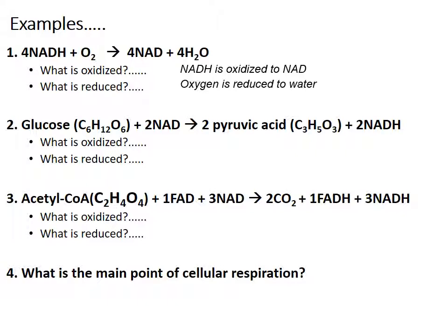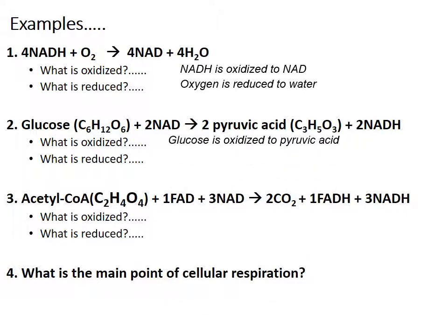In the next equation, glucose (C₆H₁₂O₆) plus NAD yields pyruvic acid (C₃H₅O₃) and NADH. Glucose is oxidized to pyruvic acid — glucose has lost electrons — and NAD is reduced, gaining electrons to become NADH.